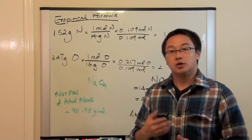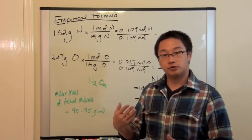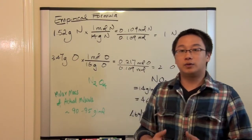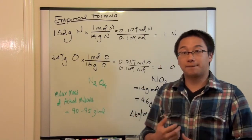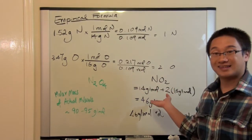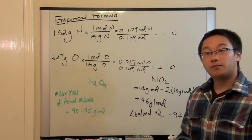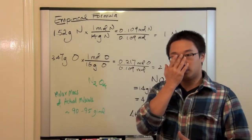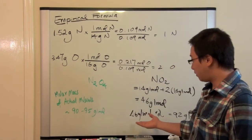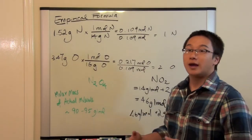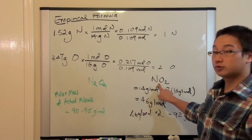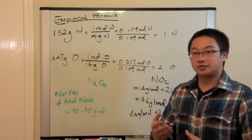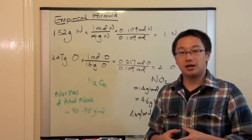Let's recap. We were given the masses of two elements, nitrogen and oxygen. We converted them to moles, then divided by the smallest number to find the ratio between the two elements, giving us the empirical formula NO₂. Then we found the molar mass of the empirical formula and compared it to the molar mass of the actual molecule. Multiplying 46 by 2 gives 92, which falls in the given range, so we multiply the subscripts by 2 to get the molecular formula N₂O₄. This is how we relate empirical formula and molecular formula.